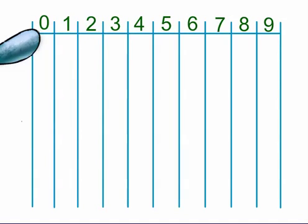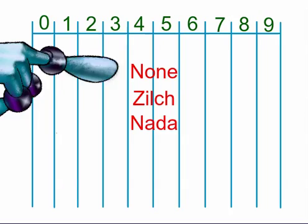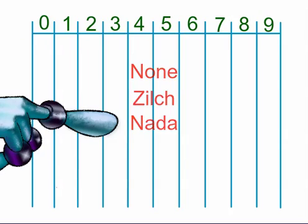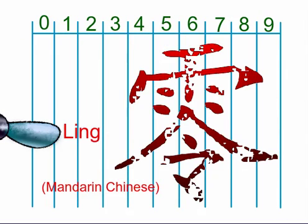Zero would represent no hamburgers. None, zilch, nada. And in Mandarin Chinese, ling.